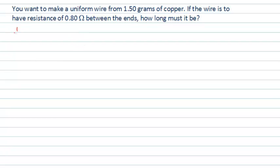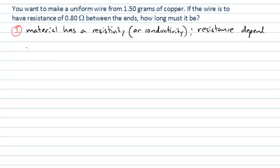We'll begin by interpreting the question. We need to think about the fact that the material has a resistivity, or we can think of it as a conductivity. Using those properties, the resistance of a particular piece of the material will depend upon how that material is arranged. In this case, if it's a wire, it will depend upon the length of the wire and the area of the wire.